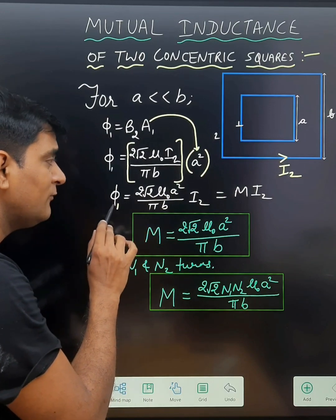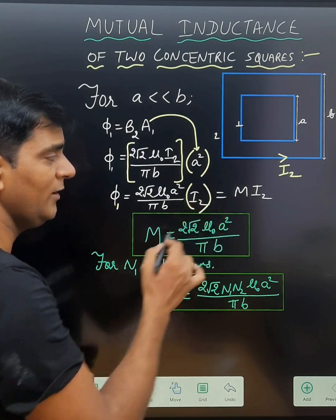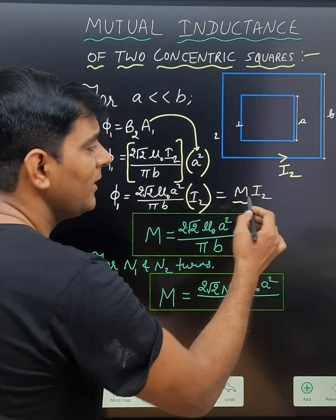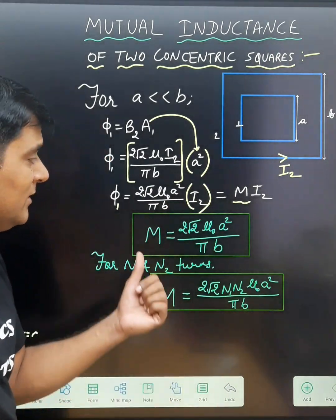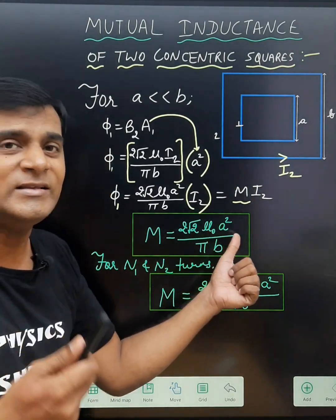Now we can find the expression φ1 equals 2√2 μ0 A² upon π B times I2. If we compare this with M times I2, then we can find the mutual inductance M equals 2√2 μ0 A² upon π B.